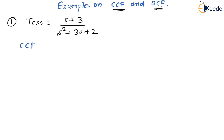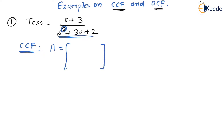For CCF, let me try to find the A matrix. What will be the order of the system — order of the matrix? It will be 2, because the characteristic equation S² + 3S + 2 has order 2, which means the A matrix should also have order 2×2.